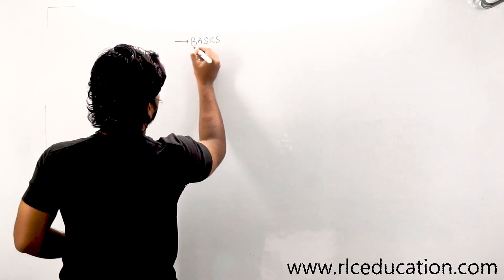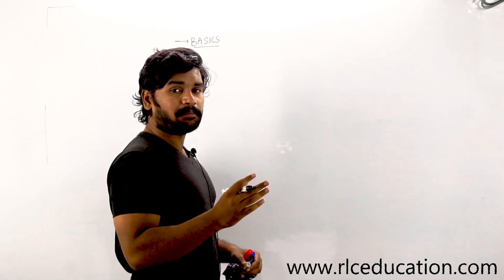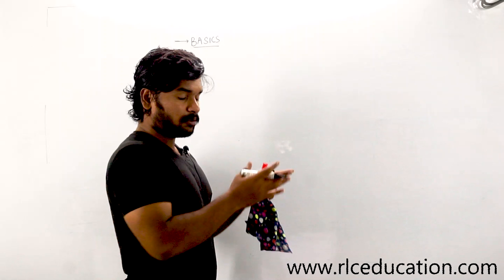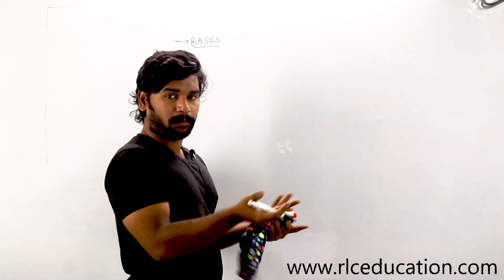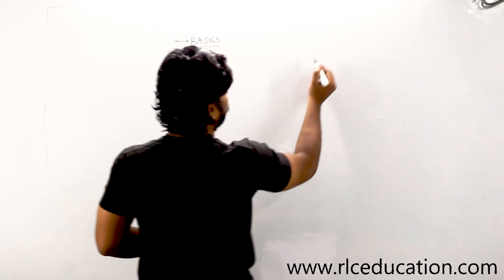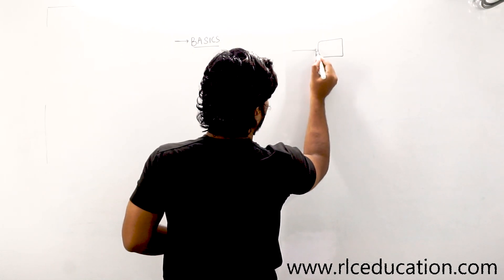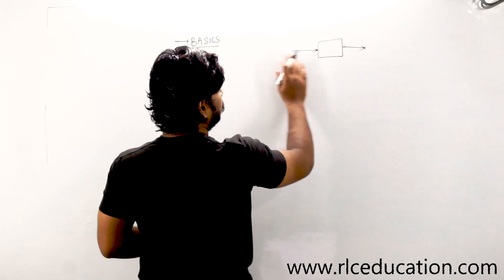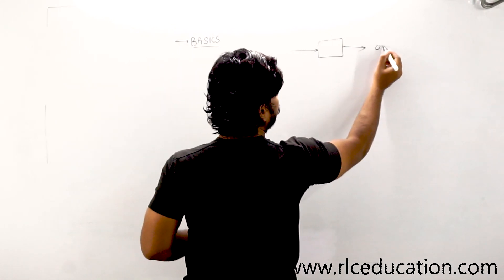In basics of control systems, one important thing that you have to remember is about feedback. Because basically a system without any control is called as an open loop system. For example, if a system is denoted like this — there is the system, there is the input, and there is the output. You are giving input, you are getting some output. It is an open loop system.